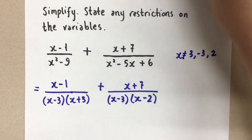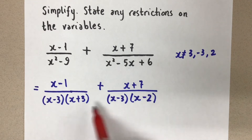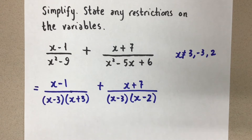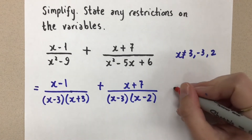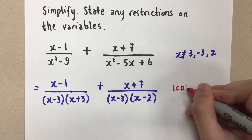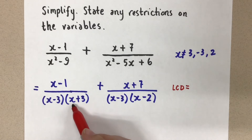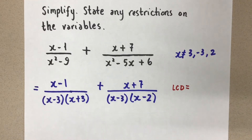Now we need to talk about the common denominator. The lowest common multiple in the denominator is going to be your easiest denominator to use. It's not the only option, but it's going to give you the least amount of work. So to do this, I start with my lowest common denominator, and I look at each factor in each denominator. I need at least one of each factor in each denominator. So it looks like this.